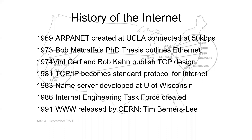Name servers came about in 1983. Before that, networks used source routing — headquarters sent you a routing file every week with predetermined routing tables, which you loaded into your system. The Internet Engineering Task Force pretty much operates the internet these days. The World Wide Web was created by Tim Berners-Lee in Europe in 1991.